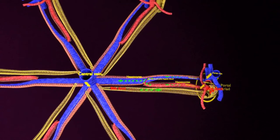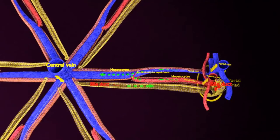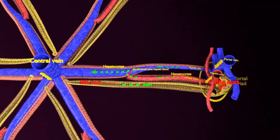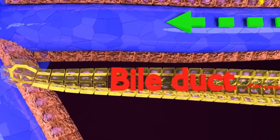I am focusing on the lobule now. As seen, it is a hexagonal structure. This is the central vein. And besides it, you can see the bile duct.